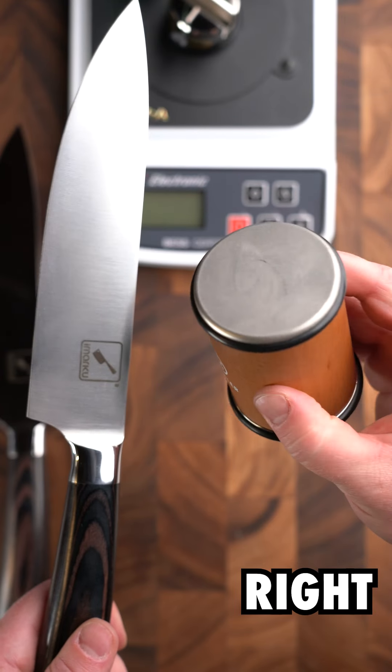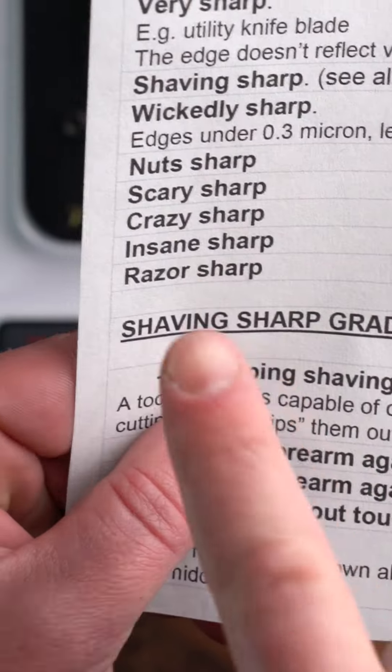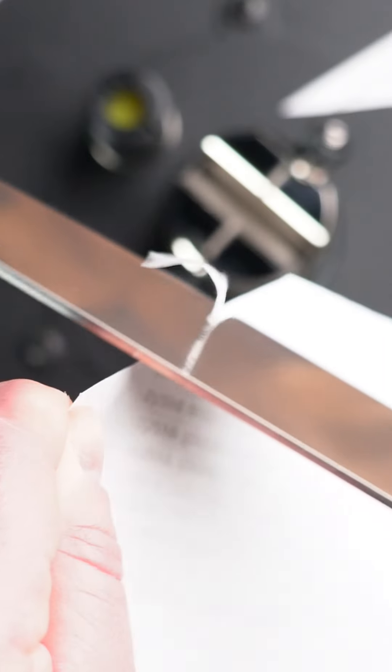Now for the one sharpened with the tumbler. 14, that's considered razor sharp. If you want sharp knives, use a tumbler rolling sharpener.